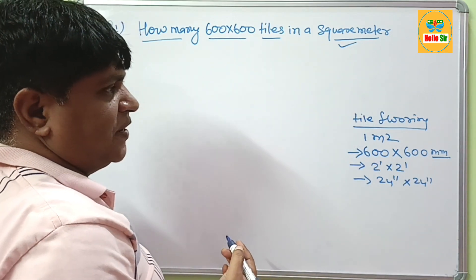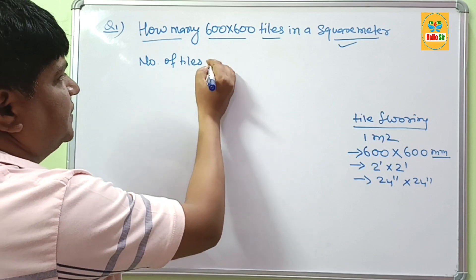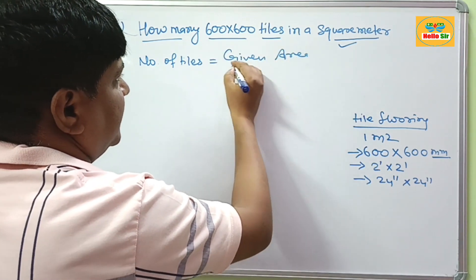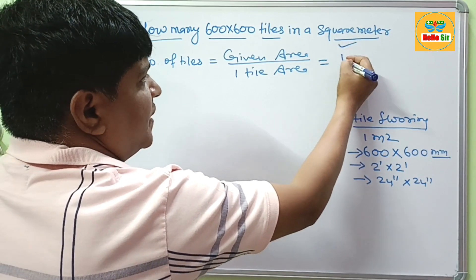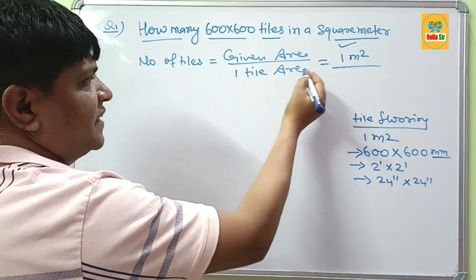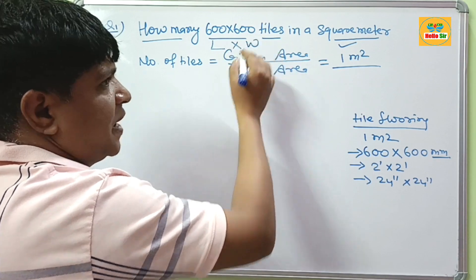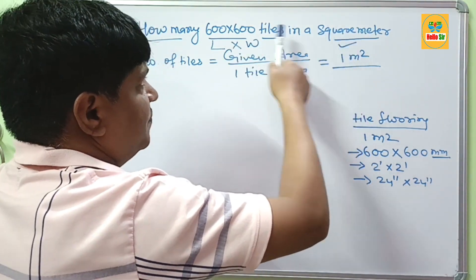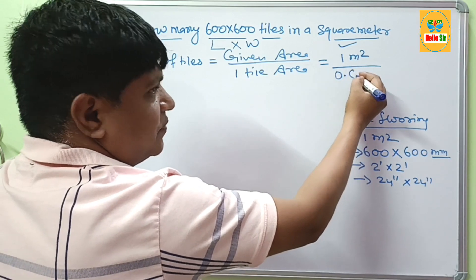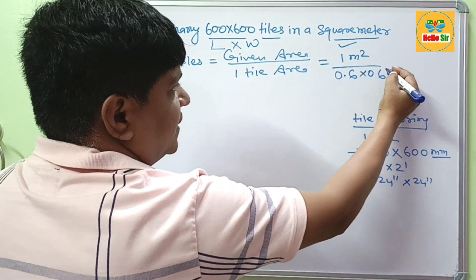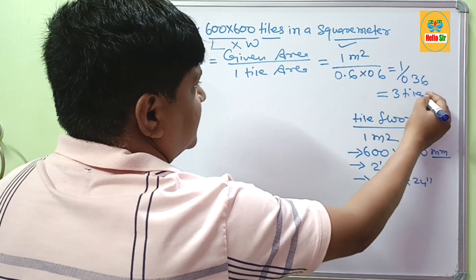The formula you need is: number of tiles equals given area divided by 1 tile area. The given area is 1 square meter. To calculate one tile area, you multiply length by width. Since both dimensions are in millimetres, you first convert to meters: 600mm becomes 0.6m. So one tile area is 0.6 x 0.6 = 0.36 square meters. Therefore 1 divided by 0.36 gives about 3 tiles.